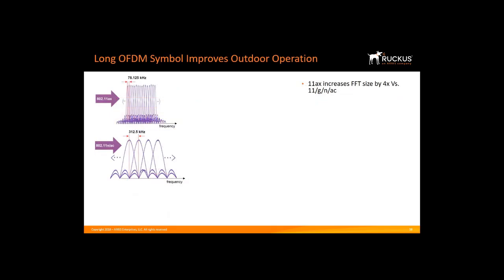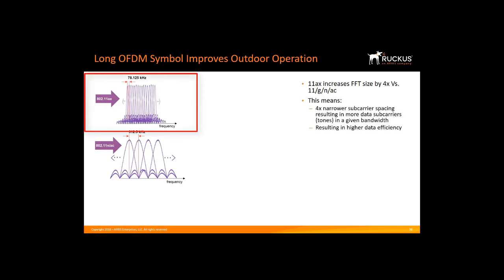Let's look at how OFDM Long Symbol improves outdoor operation. 11AX maintains the same channel bandwidth as 11AC, such as 20, 40, or 80 MHz. However, it increases the Fast Fourier Transform, or FFT, size by a factor of 4. This means there are four times more subcarriers in a given bandwidth, resulting in a four times reduction in the subcarrier spacing. So we go from 312.5 kHz to 78.125 kHz per subcarrier. This gives us a frequency domain efficiency and capacity increase, providing four times more tones or subcarriers to allocate to multiple users.